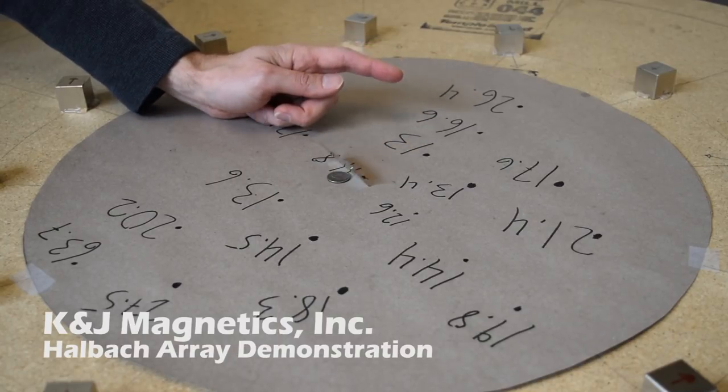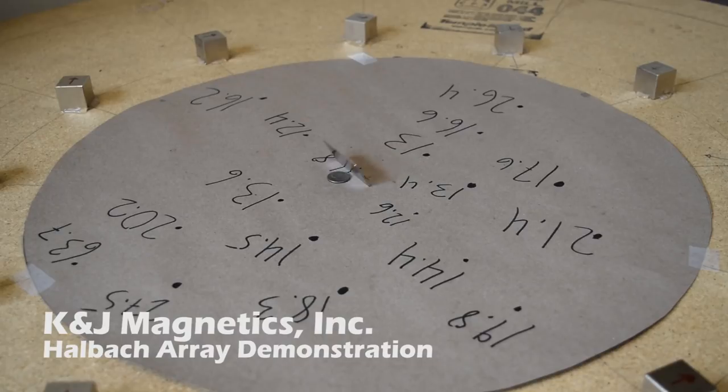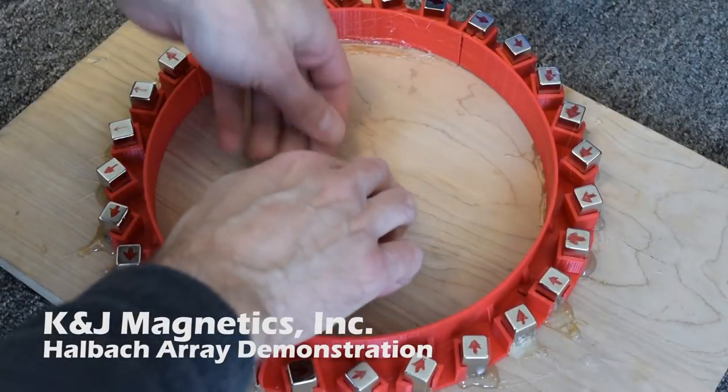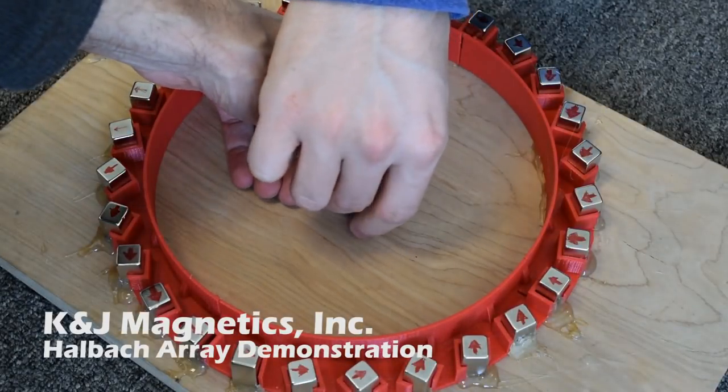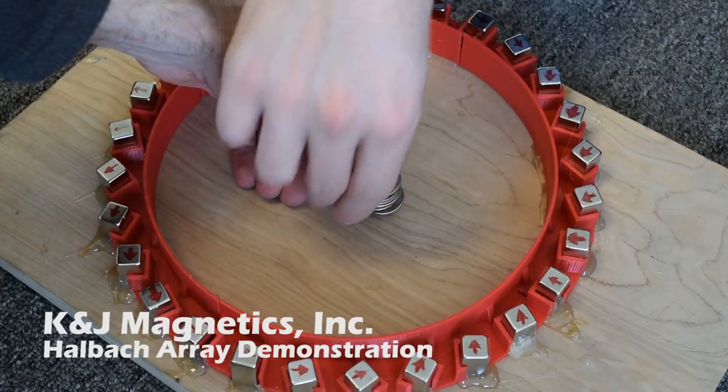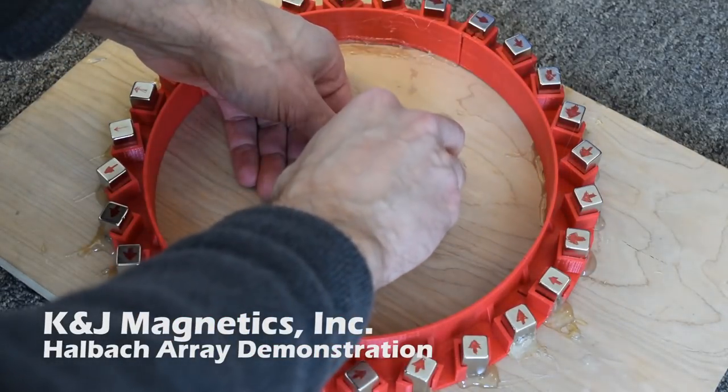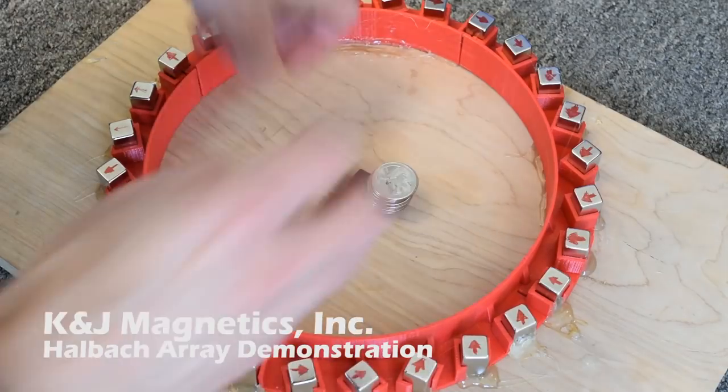Now all that's dependent on the strength of the ambient magnetic field. Here we put a one inch rubber coated block magnet inside a much stronger array. This array gave us about 73 gauss in the middle, and it takes a lot of quarters to hold it down.